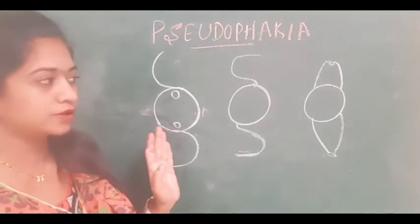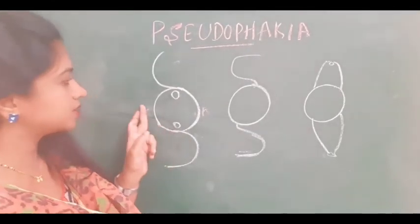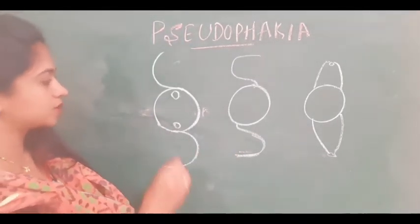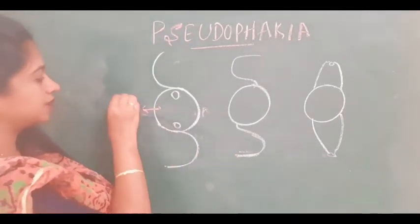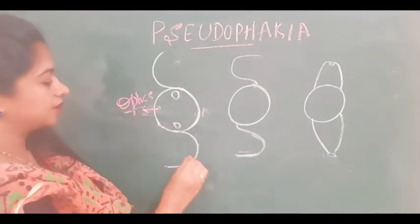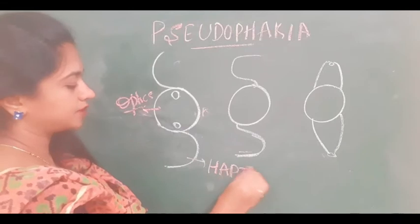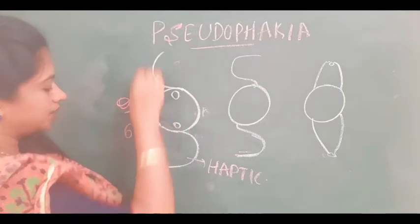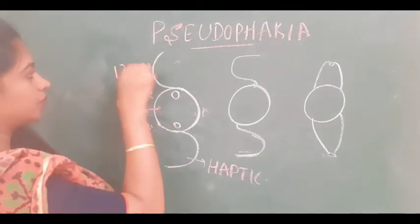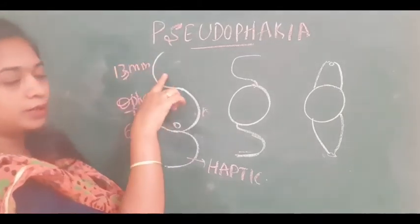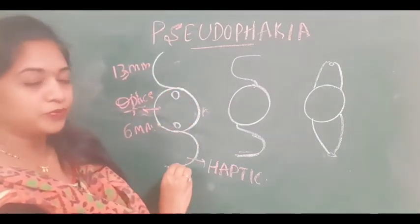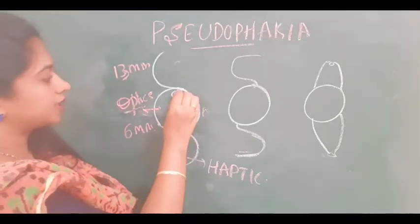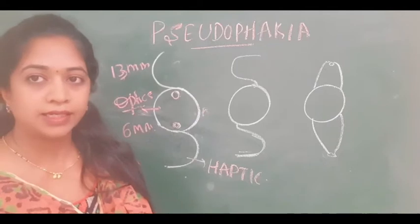Coming to the parts of the intraocular lens — this is also a favorite question in the practicals. This is the posterior chamber IOL, anterior chamber IOL, and the iris claw lens. In the posterior chamber IOL, which is most commonly used, the central part is called the optic of the lens, and these two extensions are the haptics of the lens. The optic has a diameter of around 6 mm and the overall lens has a diameter of around 13 mm. The haptic which goes into the eye first is called the leading haptic, and the one which goes in last is called the trailing haptic.